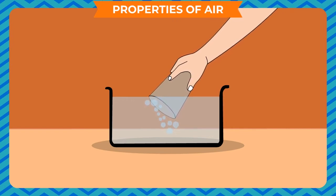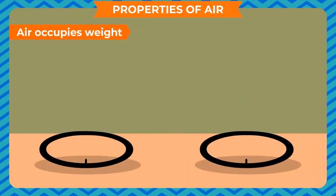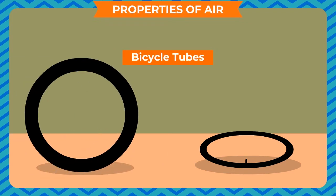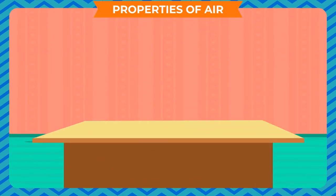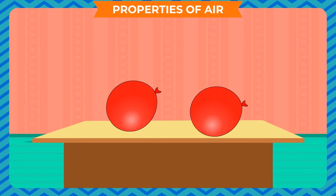This clearly shows that air occupies space. Air has weight: to prove that air has weight, take two empty bicycle tubes. Fill air into one tube and experience the weight of both tubes. We feel that the tube containing air is heavier, thus showing that air has weight. We can do another experiment: blow two balloons of the same size.